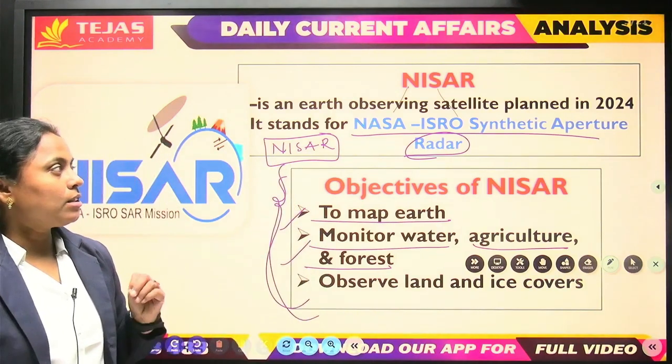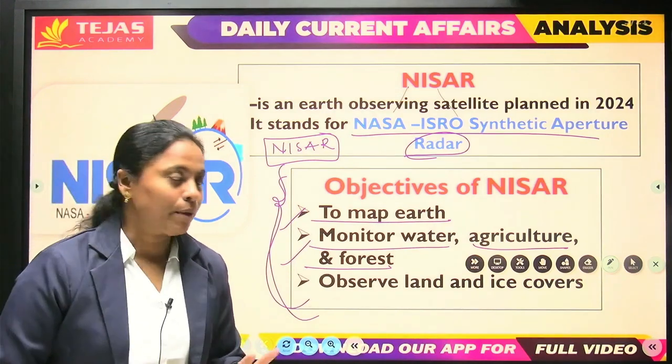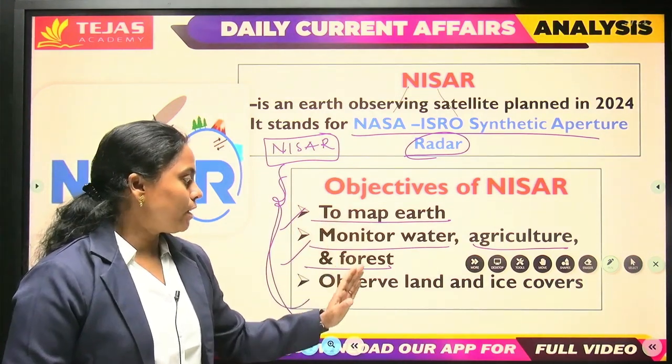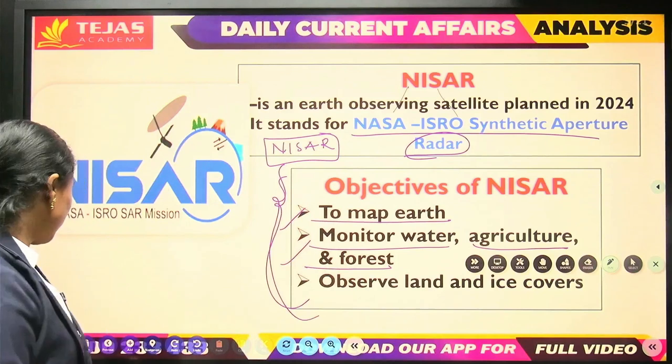So, NASA ISRO Synthetic Aperture Radar is mainly used to map the earth, and monitor and observe the land, ice, and covers.